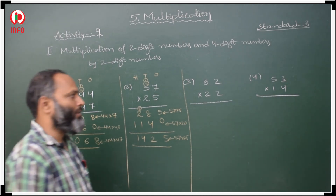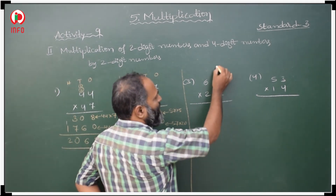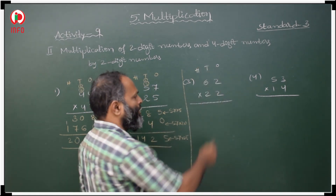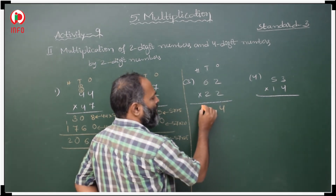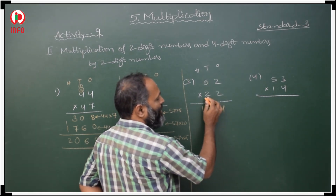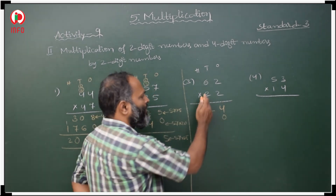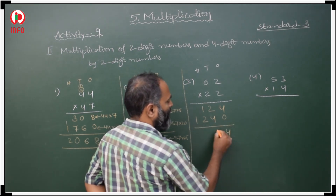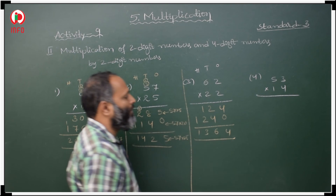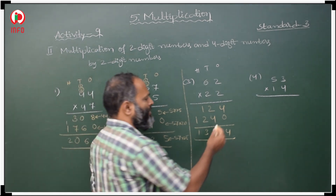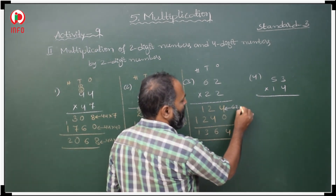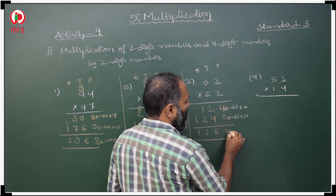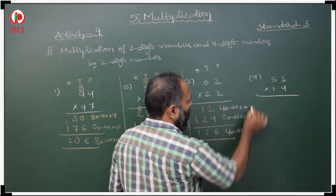Third question: ones, tens, hundreds. Start with 2: 2 twos are 4; 2 sixes are 12 — it is in tens place, first keep 0. 2 twos are 4; 2 sixes are 12, carry over. Adding: 4, 6, 3, 1. This is 62 with 2, 62 with 20, and 62 with 22.